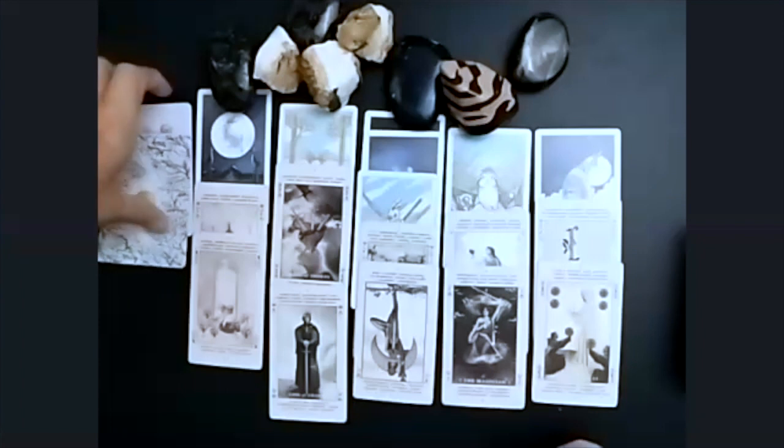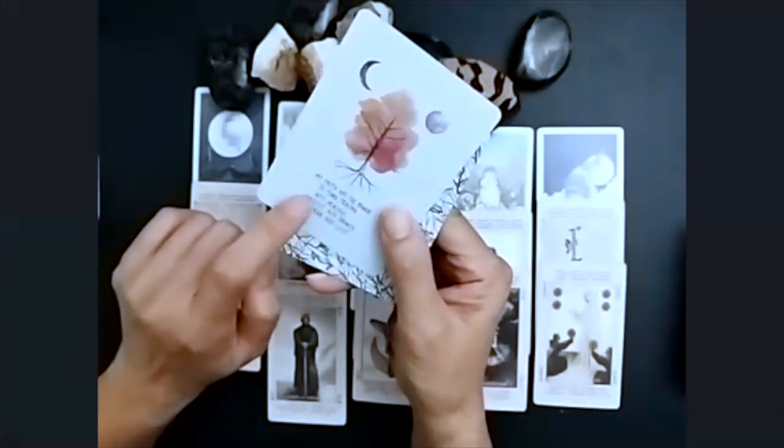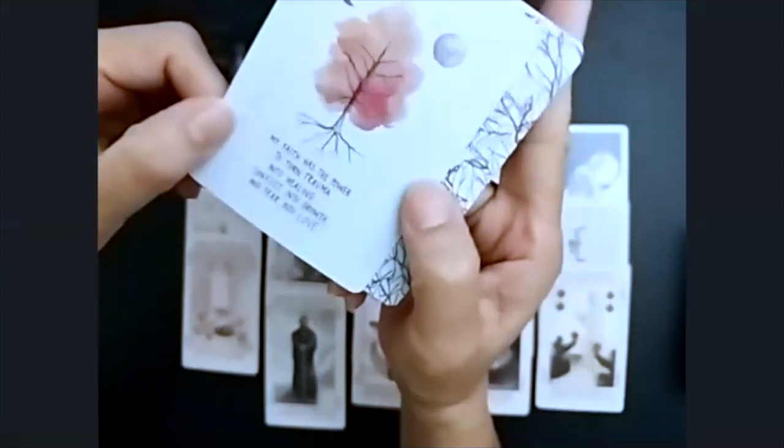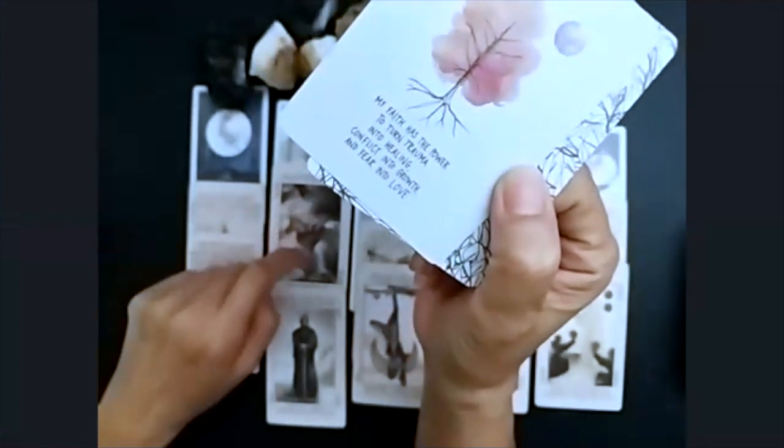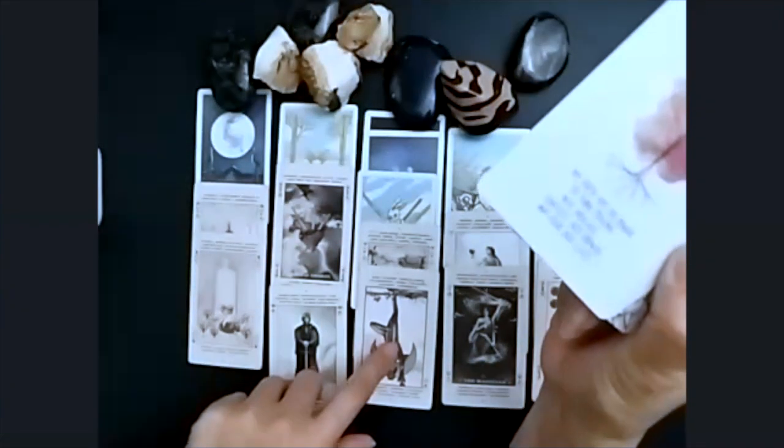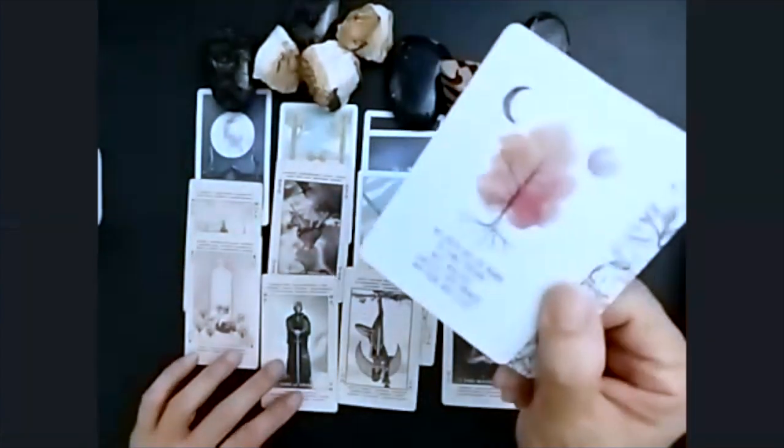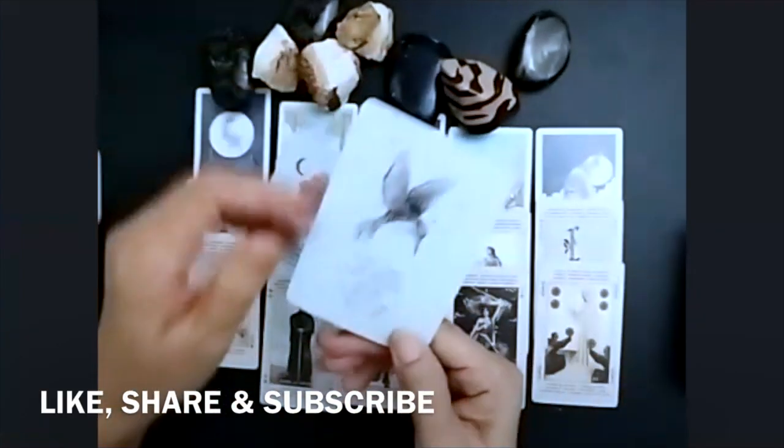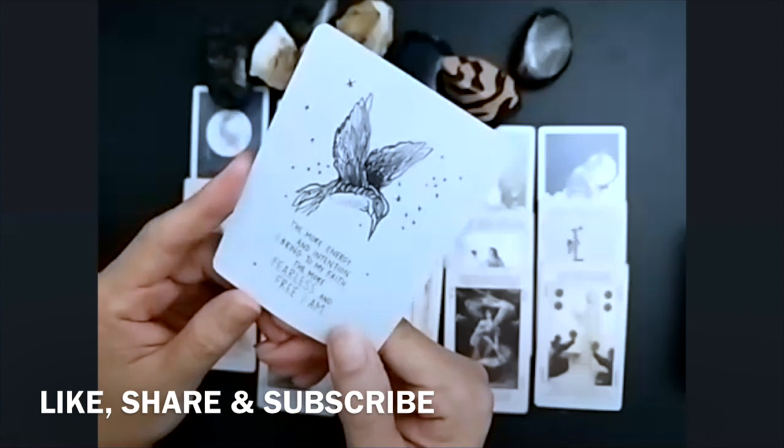Let's see what the message from Spirit is. Remember the one that I flipped open? It says here, my faith has the power to turn trauma into healing, conflict into growth, and fear into love. I kid you not. This is exactly what it's saying. It's asking you to turn your trauma into healing. Trauma from the past that you have not dealt with. Whatever conflict that you're experiencing with family, within your relationships, marriage, turn into growth. And then anything that you're afraid of, turn it into love. Second card, the more energy and intention I bring to my faith, the more fearless and free I am. This is lovely.